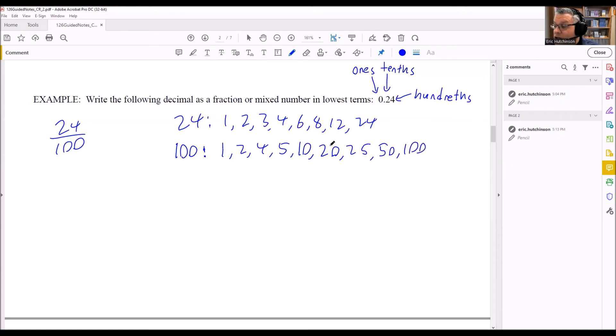Find the largest number that's here. So the largest number that you would see from this list is going to be 4, which means that we can divide each of these by 4. So 24 divided by 4 is 6.